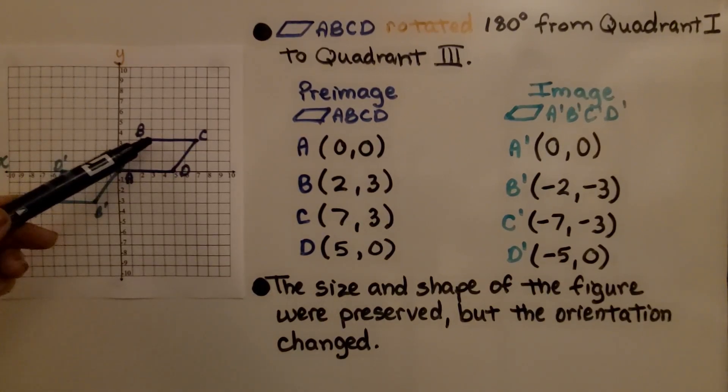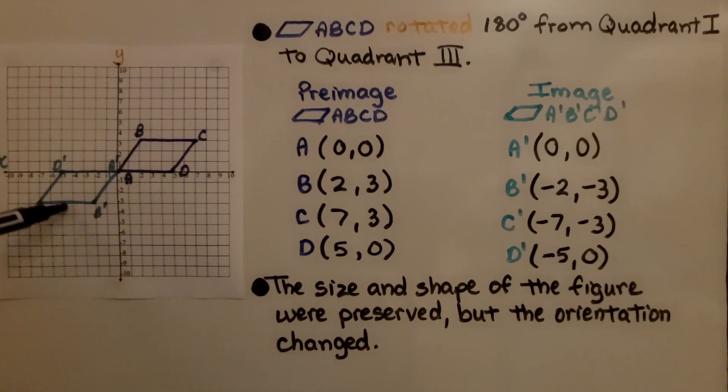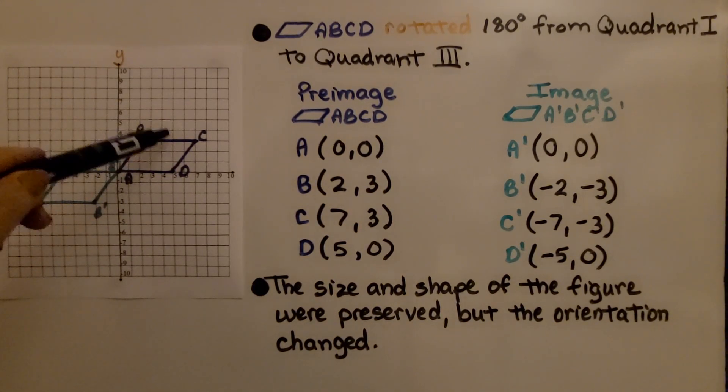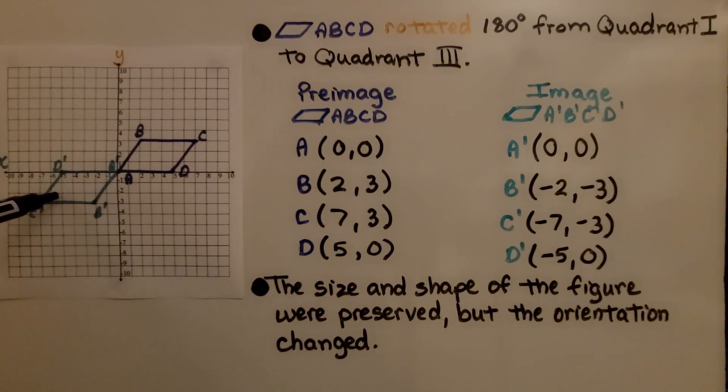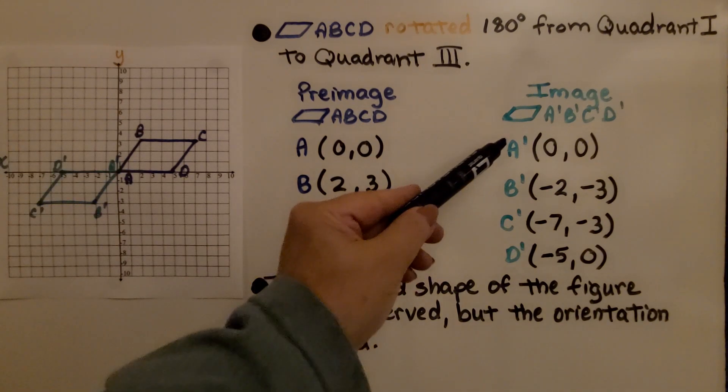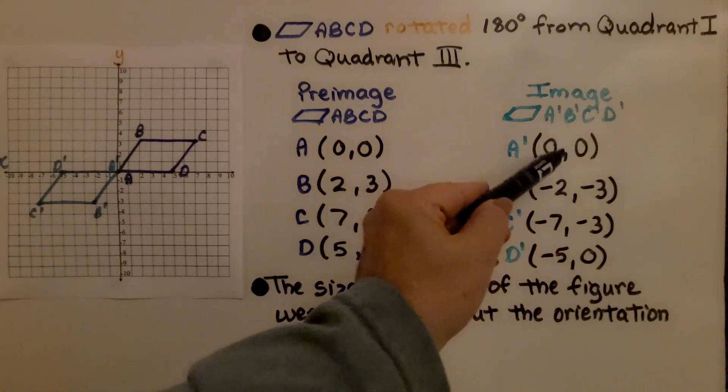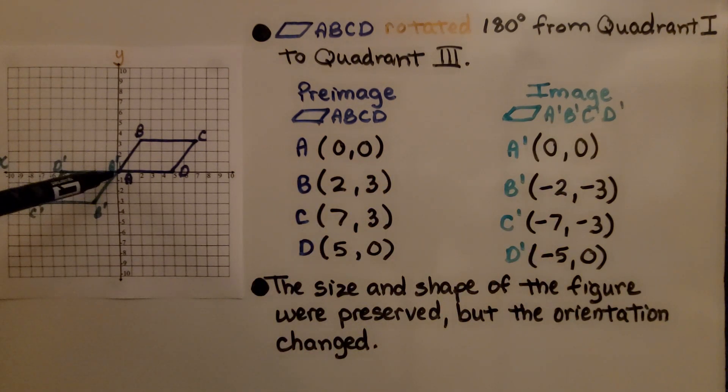Quadrilateral ABCD rotated 180 degrees from Quadrant 1 to Quadrant 3. The preimage for quadrilateral ABCD has A at the point (0, 0) at the origin. So does the image quadrilateral A prime, B prime, C prime, D prime. It's also at (0, 0). That is the center of rotation.